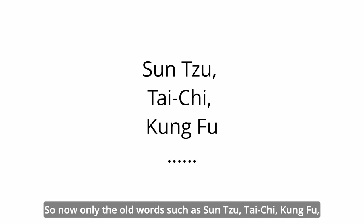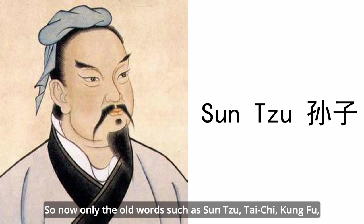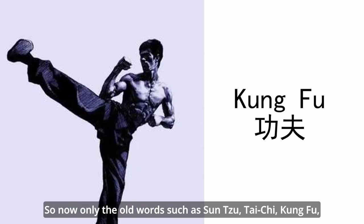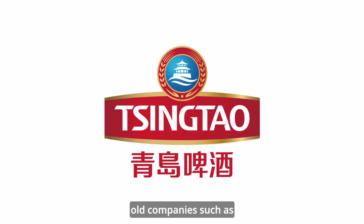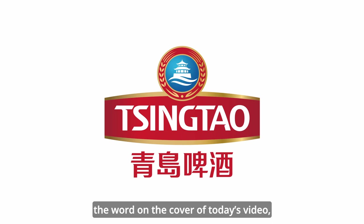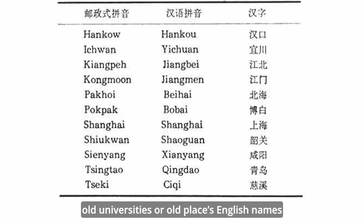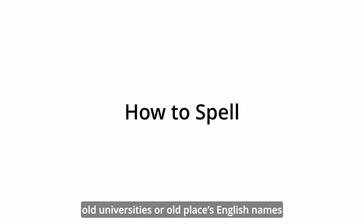So now, only old words such as Sun Zi, Tai Ji, Gong Fu, old companies such as the brand on the cover of this video, old universities, or older English place names still retain the Yu Zheng Shi Pinyin spelling.